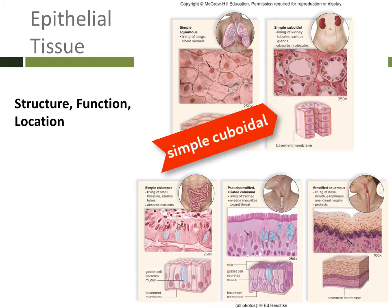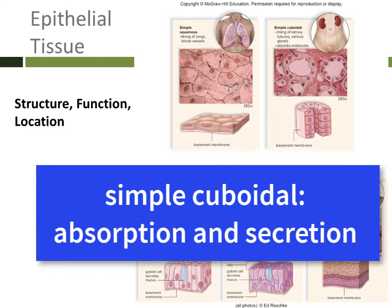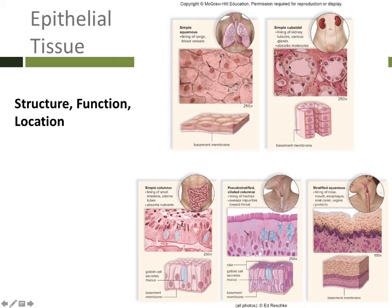The next type of tissue is simple cuboidal — one layer of square-type cells. You can see what they look like here: they're very squarish, and you can see the basement membrane underneath as this line. You're going to find simple cuboidal in places like the lining of the kidney tubules, where there's a lot of absorption and secretion. Things are coming into and out of the cells — not necessarily passing right through them — but being secreted into the lumen of the kidney tubules.